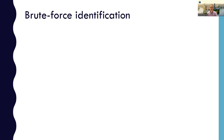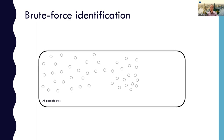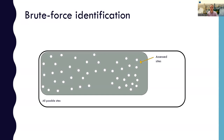Before moving on to our more advanced methods to identify these sites, let's look at a visual representation that we can use to understand the problem. What we have here is just a 2D abstract representation of all the possible sites in the genome — all the possible sites that CRISPR could target — and so that's the sites we need to check to see if they have one to four mismatches compared to the guides that we're designing. In the brute force method, we're going to assess all of these sites, but only very few of them are going to be the real off-target sites that have one to four mismatches.